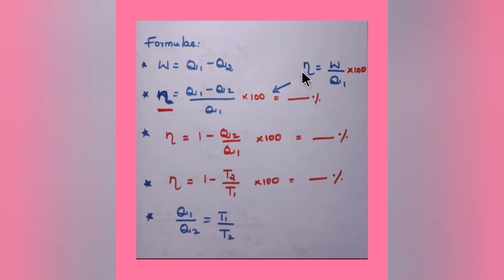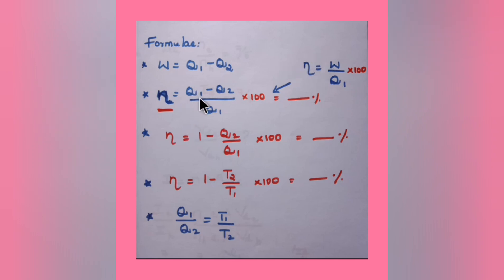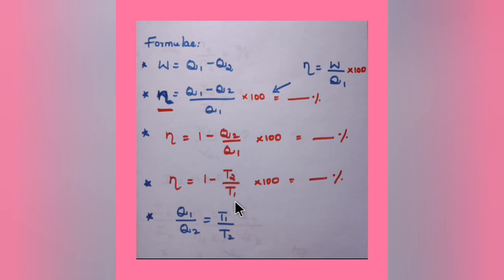If they ask to calculate the efficiency of the Carnot engine and work done or Q1 and Q2 are known, use η = (W/Q1) × 100 where W = Q1 − Q2. Alternatively, η = (Q1−Q2)/Q1 × 100. If only the two temperatures are given, use η = (1 − T2/T1) × 100 to get the efficiency percentage.